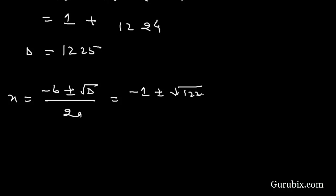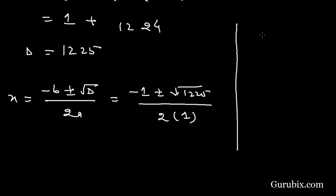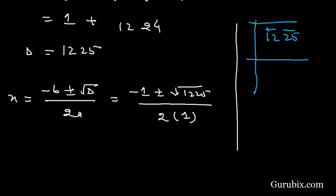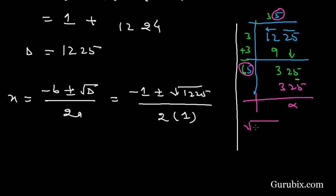We find the square root of 1225 using the long division method. Making pairs from right to left, we get 12 and 25. We find 3, since 3 times 3 equals 9, subtract 9 from 12 to get 3, then bring down 25 to get 325. Adding 3 to 3 gives 6; dividing 325 by 65 gives 5. Since 65 times 5 equals 325, the square root of 1225 is 35.